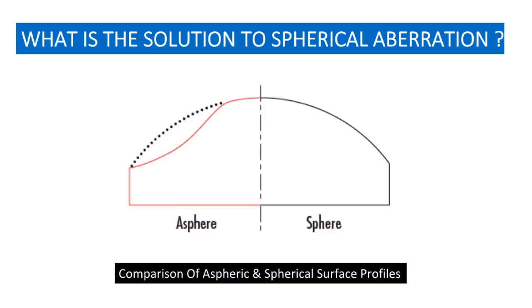Spherical aberration can be minimized by carefully choosing the surface curvatures for a particular optical application. In short, the solution to this is to use aspheric lenses.